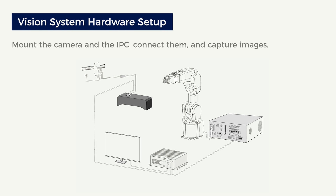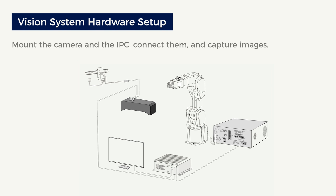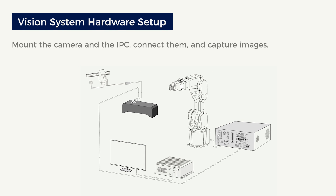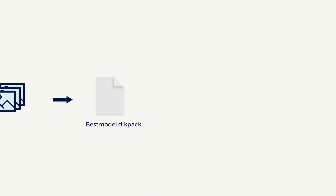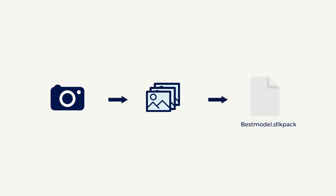First of all, vision system hardware setup is an introduction to how to mount the camera and the IPC, connect them, and capture images using the camera. In this part, we will capture images and train a deep learning model in advance for efficiency.